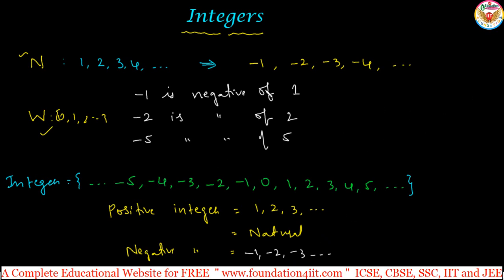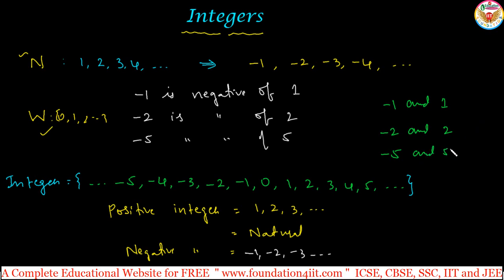Now, positive and negative integers are opposite to each other. That means if you see minus 1 and 1, these are called opposites of each other. Same way, minus 2 and 2 are opposite of each other. You can take any number — so minus 5 and 5 are all opposite to each other, and so on.